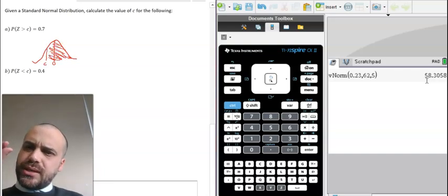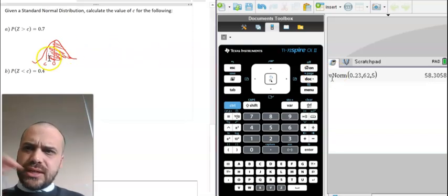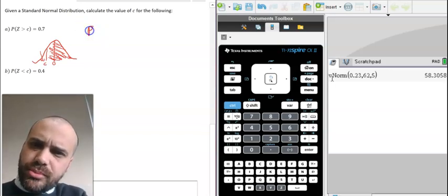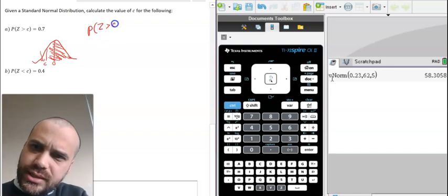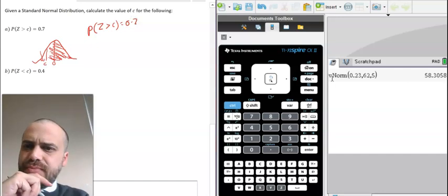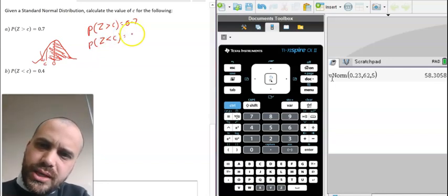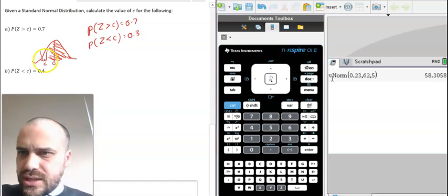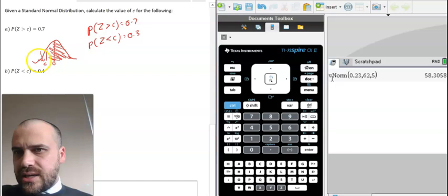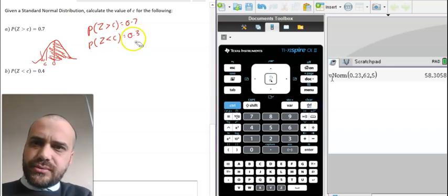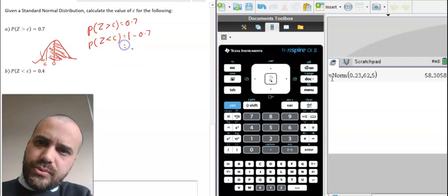So this time we have a little bit of a problem here because our calculator doesn't shade in the inverse normal like that. Our calculator does this bit here. So we need to be a little bit clever with this. We can say that the probability that Z is greater than C equals 0.7. We can also say that the probability that Z is less than C would be equal to 0.3, because if the probability that something is greater than is 0.7, then the probability that it's less than is 1 minus 0.7, which is 0.3.